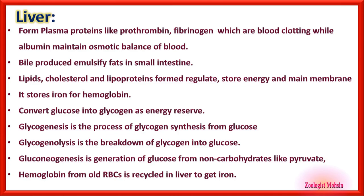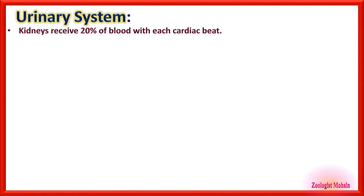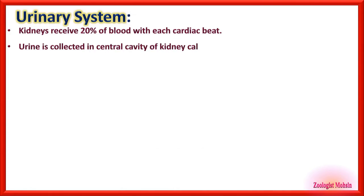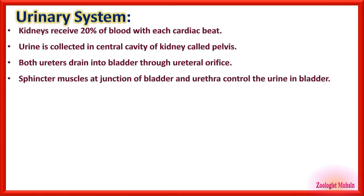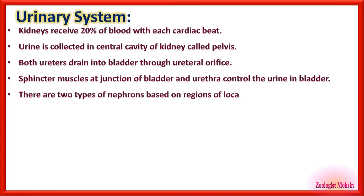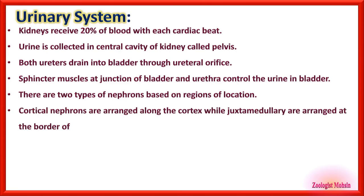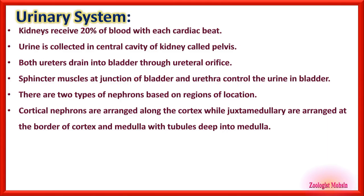Hemoglobin from old red blood cells is recycled in the liver to get iron and other components. Kidneys receive 20% of blood with each cardiac beat. Urine is collected in the central cavity of the kidney called the pelvis. Both ureters drain into the bladder through the ureteral orifice. Sphincter muscles at the junction of bladder and urethra control urine flow. There are two types of nephrons: cortical nephrons arranged along the cortex only, and juxtamedullary nephrons arranged at the border of cortex and medulla with tubules deep into the medulla.